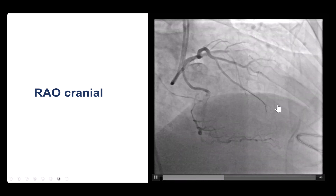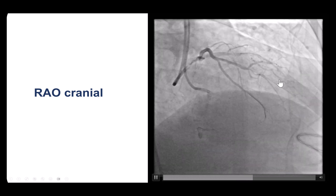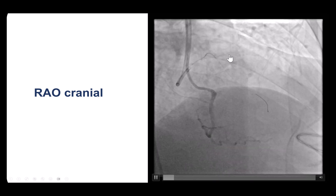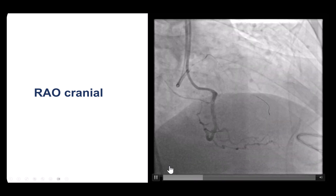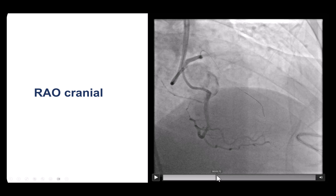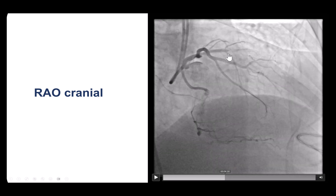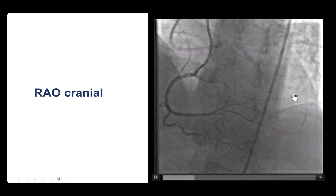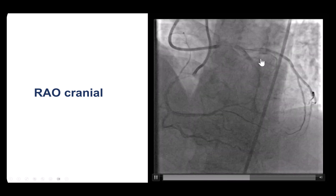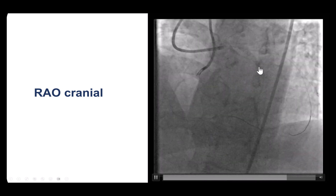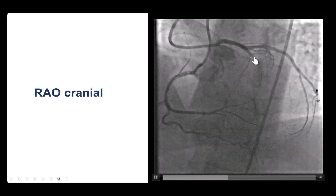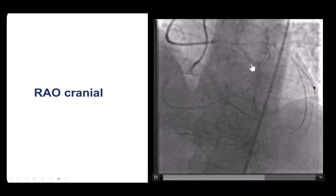We can see some septal collaterals going all the way to the LAD. The LAD has a well-defined proximal cap — it is a tapered cap, but there is significant calcification, short lesion length, and the distal vessel seems to be good quality. The same thing can be seen on the LAO cranial, where we see the short occlusion length, some bridging collaterals, and some septal collaterals. The distal vessel is good quality, but there is heavy calcification on the proximal cap.